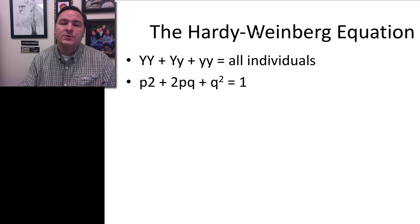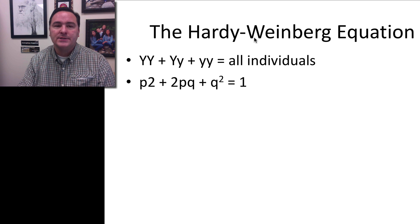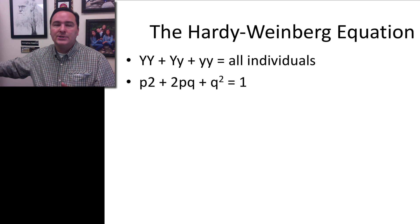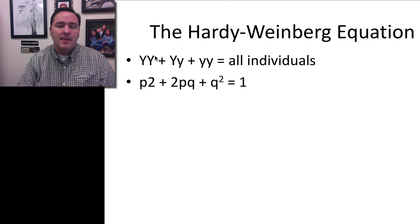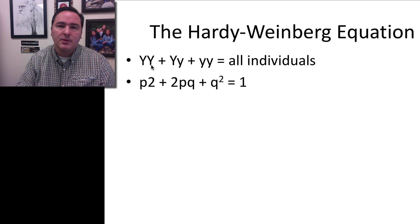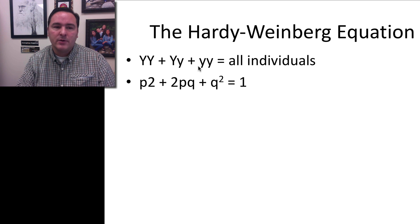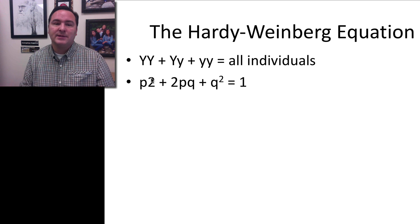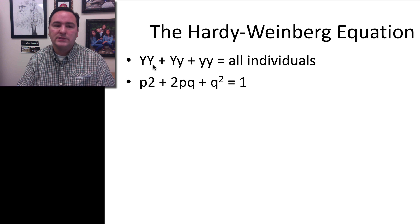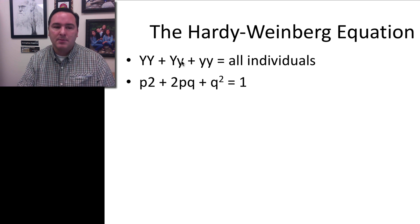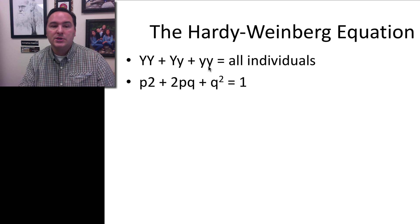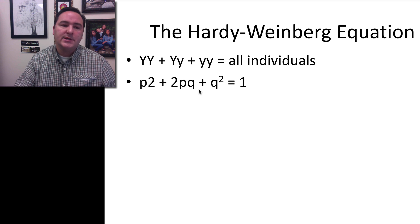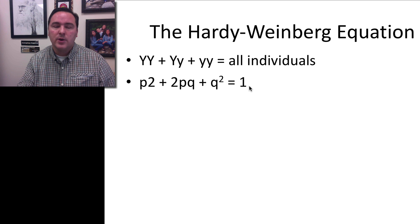This leads us then into what we're going to call the Hardy-Weinberg equation. These are the two investigators that first described population genetics and how you can track population estimates from one generation to the next. And they basically stated this. They said the genotype frequency of big Y big Y plus the genotypic frequency of big Y little y plus the genotypic frequency of little y little y equals all of the possible genotypes in that population. So because the genotypic frequency in the next generation of big Y big Y is P squared, we can say P squared plus 2PQ, the heterozygotes, plus Q squared, the homozygous recessives, equals of course 1 or 100%. That is the Hardy-Weinberg equation. P squared plus 2PQ plus Q squared equals 1.